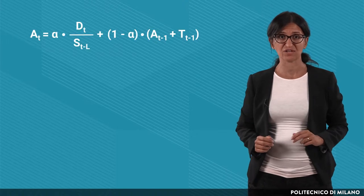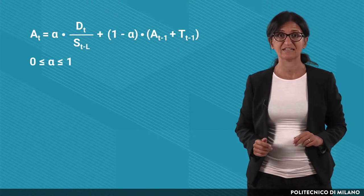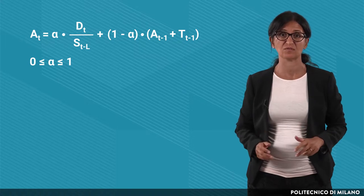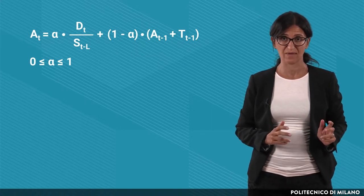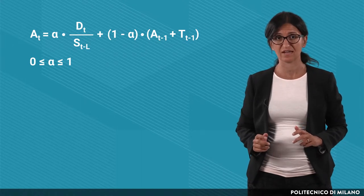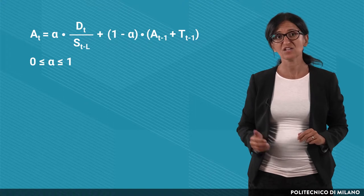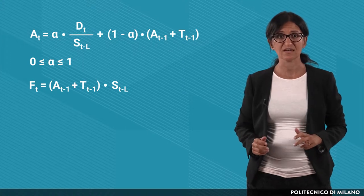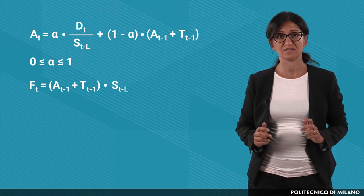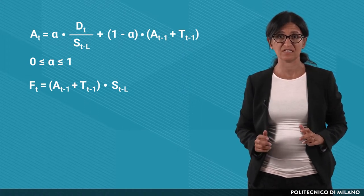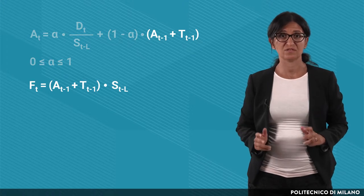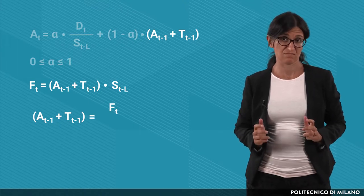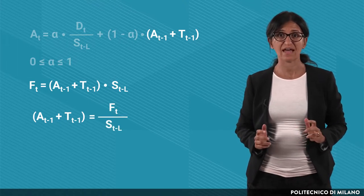Let's start with the average. Alpha is a smoothing coefficient and its value can range from 0 to 1. The new value of the average is obtained from the weighted average between the more recent value of demand, adjusted to remove the seasonality, and the previous forecast, once again adjusted to remove the seasonality. In fact, the forecast demand in period t is equal to a(t-1) plus trend in (t-1), multiplied by the seasonality in (t-L). So the term a(t-1) plus T(t-1) is equal to the forecast F(t) divided by the seasonal factor S(t-L).